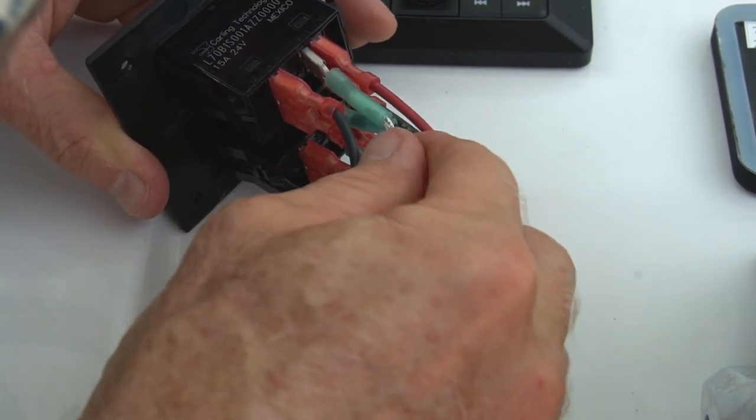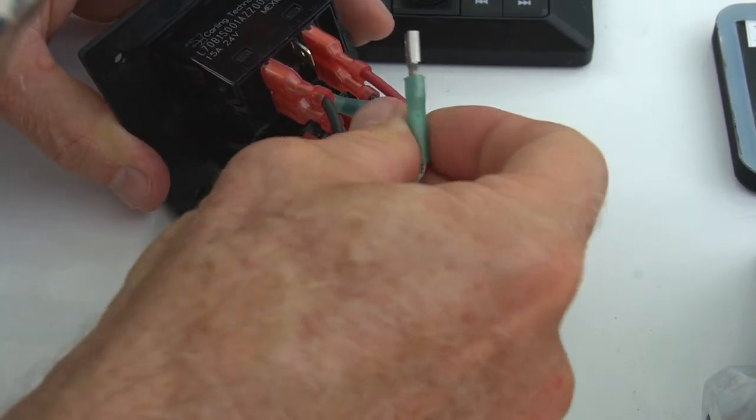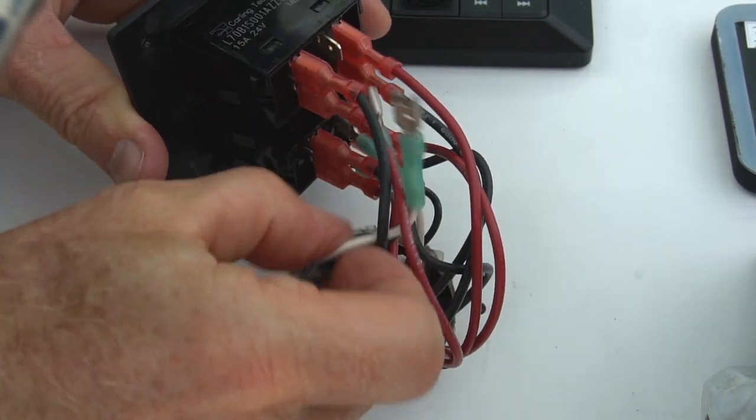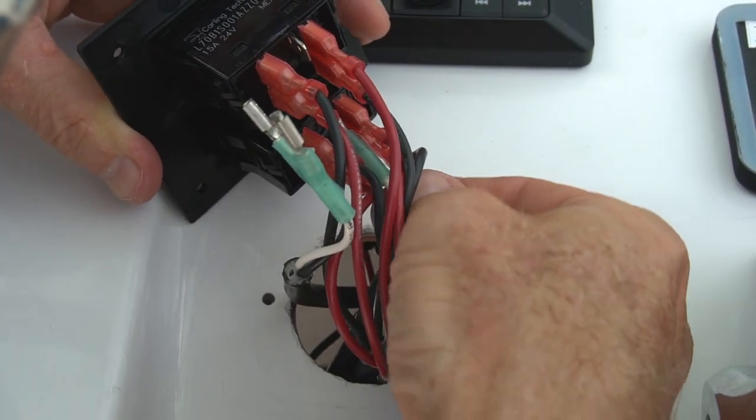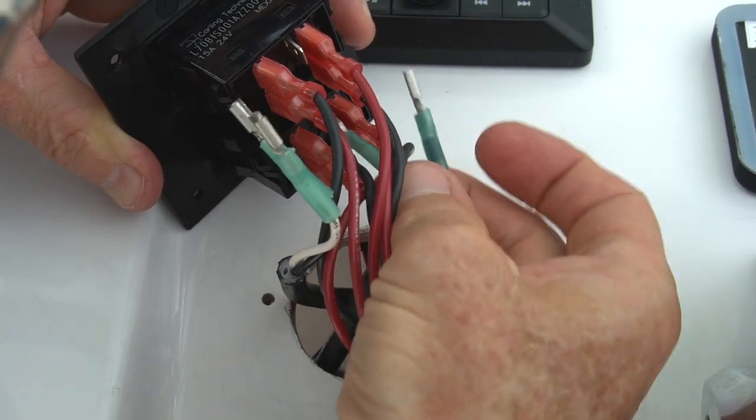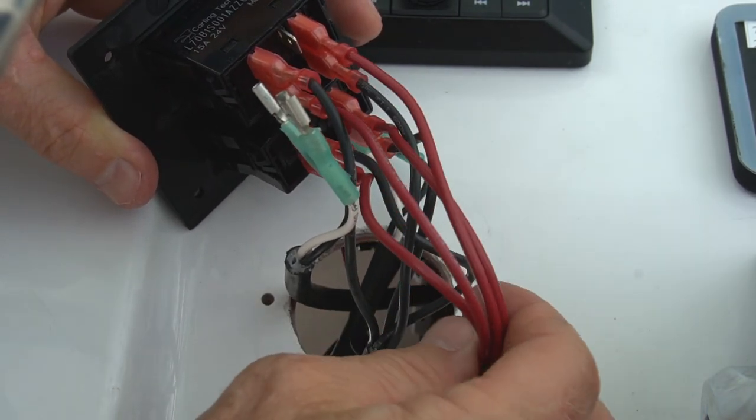Go ahead and pull the white and black port actuator wires and the starboard actuator wires free from the rocker switch. Also, pull off the 12-volt battery positive and negative wires as well.